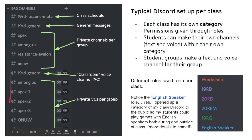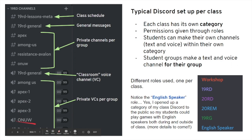For a typical class category setup, I would have a channel where I post the class schedule, a channel for general messages (text channels), and channels that student groups made themselves — so the Apex Legends group had a text channel, Among Us, Resistance Avalon, and One Night Ultimate Werewolf groups each had their own. We had a general classroom voice channel where everyone congregated at the start of class, and then groups would split into their own voice channels to chat, discuss, and do work together.